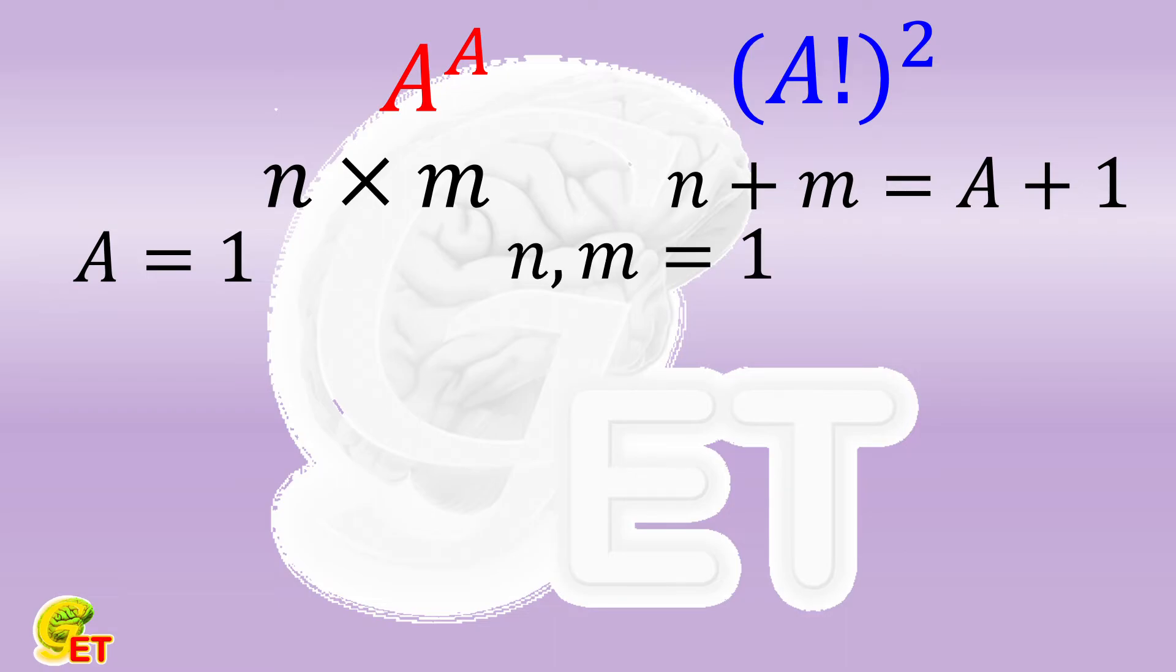The other case is that A is equal to 2. And now, either m equals to 1 and n equals to 2, or the other way around.